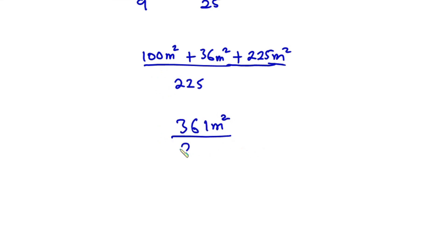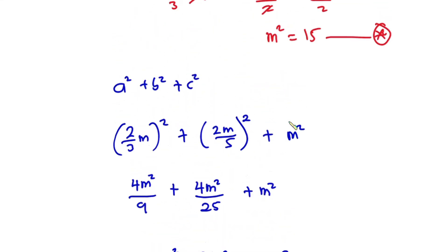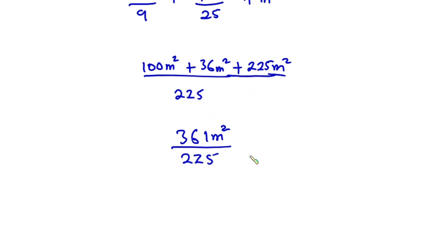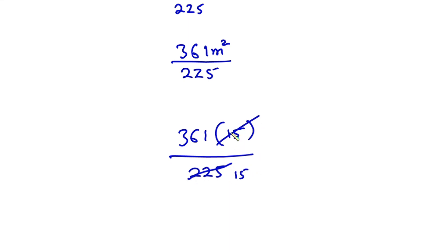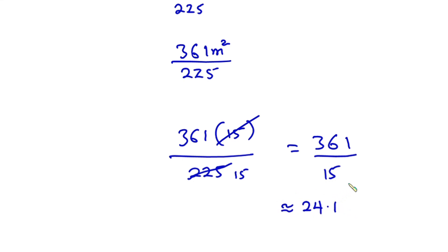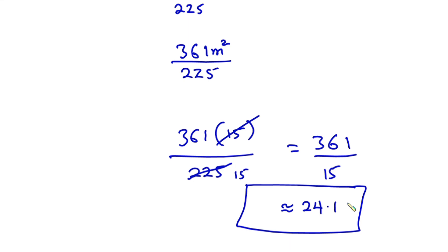From equation star, we know m squared is equal to 15, so we have 361 times 15 divided by 225. Simplifying, 15 goes into 225 fifteen times, leaving us with 361 divided by 15, which is approximately 24.1. So this is our final answer. I hope you found this video useful — thanks for watching, have a nice day, and see you in the next video.